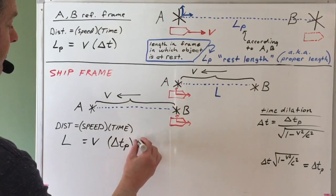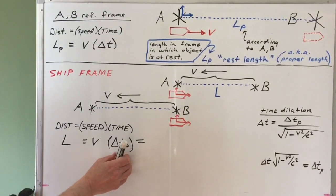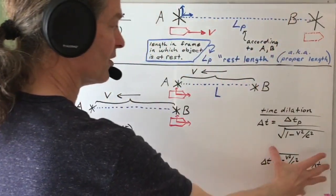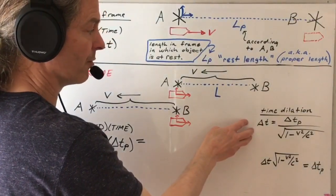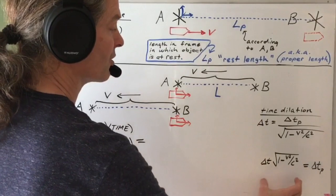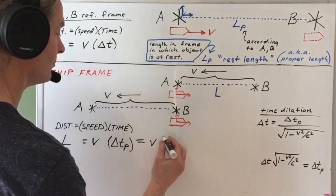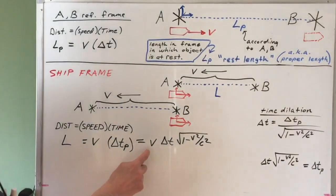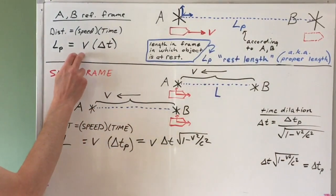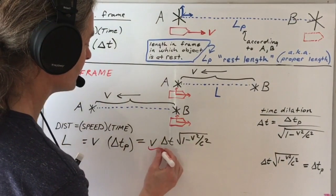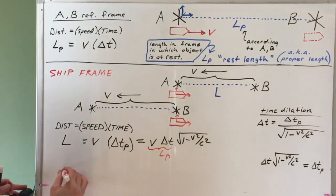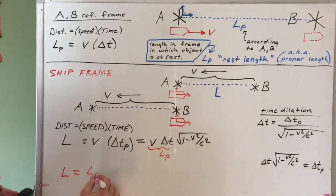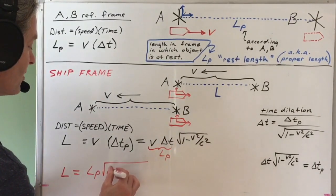Now we can do one more step. Delta T sub P is the elapsed time in the ship's frame. We can relate that to the elapsed time in the star A and star B frame using the time dilation formula. Solving for the proper time and plugging it in, we see that V times delta T appears in both equations, and V times delta T is just the proper length L sub P. So we get that the length L in the ship's reference frame between star A and star B equals L sub P times the square root factor.